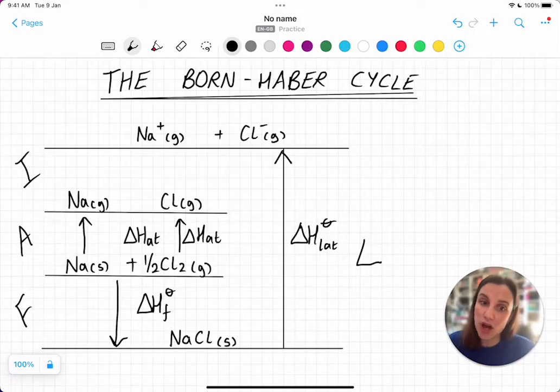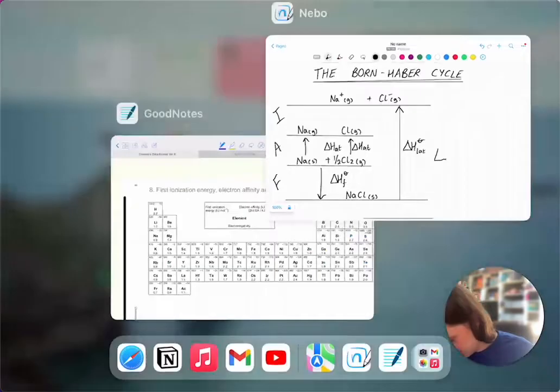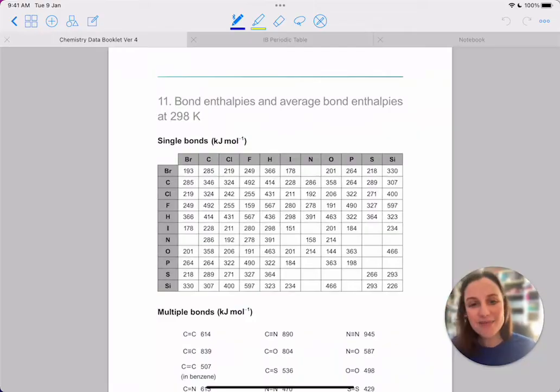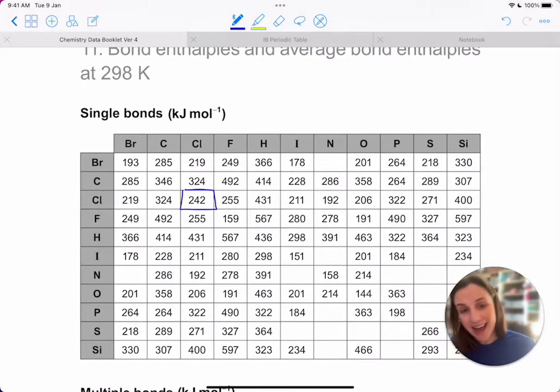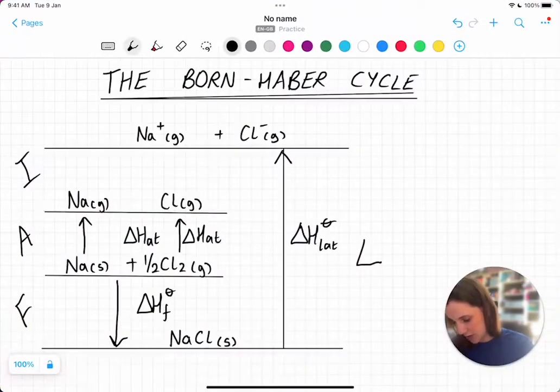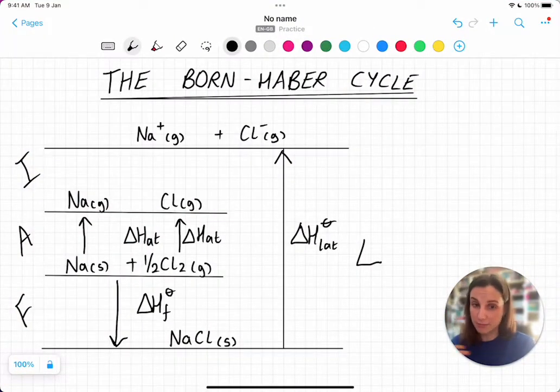For the atomization of chlorine, you can actually find in the data booklet under the bond enthalpy. So if I show you in the data booklet, under table 11, you've got bond enthalpy values. So this value here for chlorine, this 242, actually relates to the value where you take chlorine, the bond enthalpy, and you split it up into 2 Cl. We're going chlorine gas to 2 Cl atoms. What we're doing in this example is we're doing this process but kind of halved.